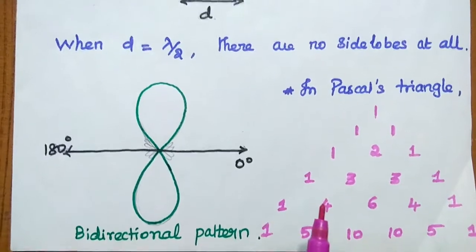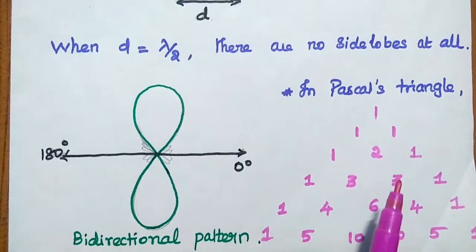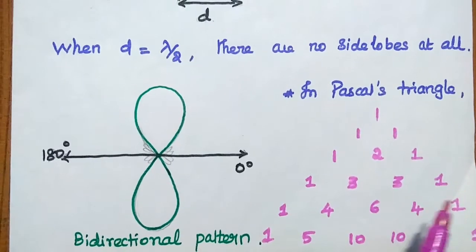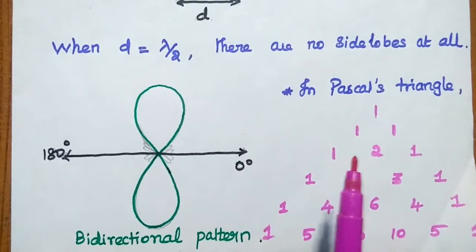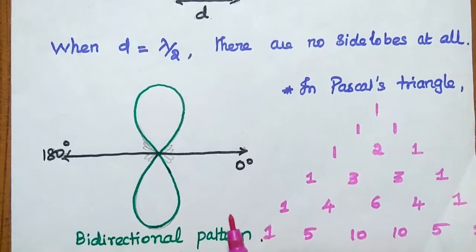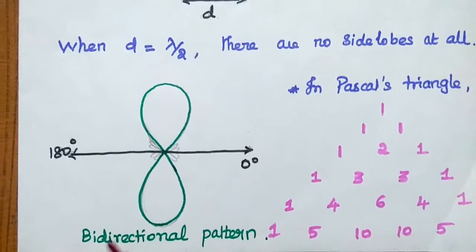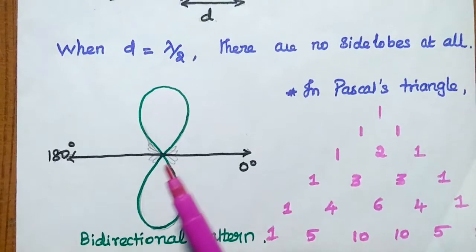If it is five elements, I can mention 1, 1 plus 3 is 4, 3 plus 3 is 6, 3 plus 1 is 4, and then 1. This is Pascal's triangle which represents the amplitude distribution of the binomial array.